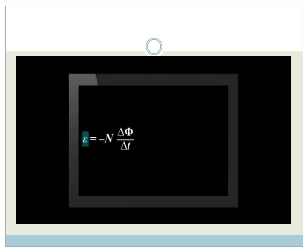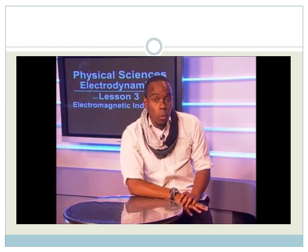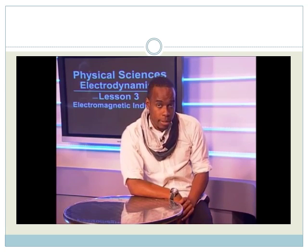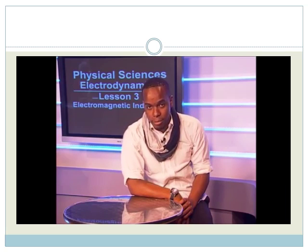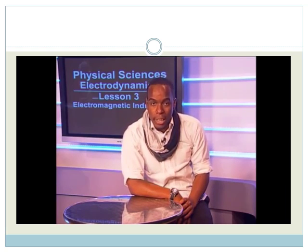Written in words, it says that the EMF, represented by the Greek letter epsilon, of a solenoid is equal to the number of turns multiplied by the rate of change of magnetic flux. Wow, that looks complex, but it's really not. It describes why we observed some of the events earlier in our lesson.